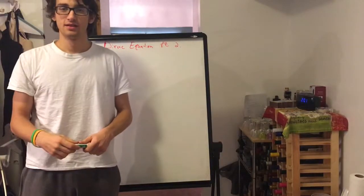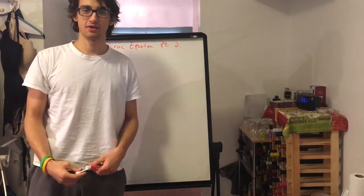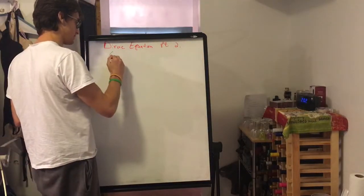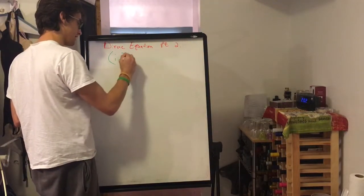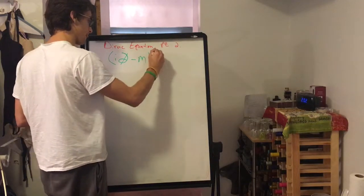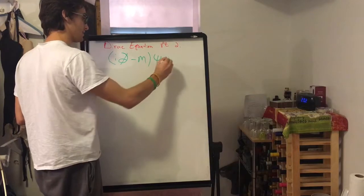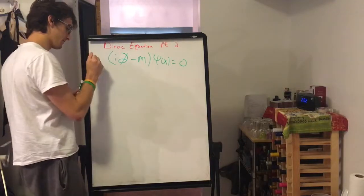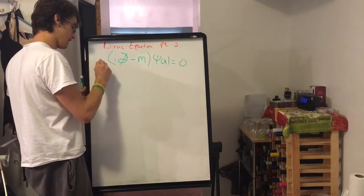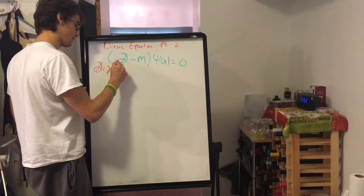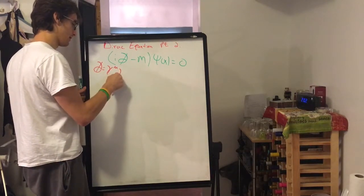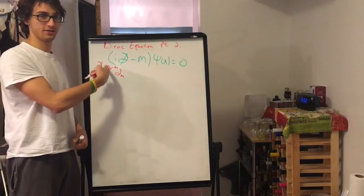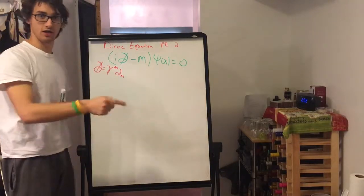Hello, welcome. In this episode, we're going to be going over solutions to the Dirac equation. So just to remind you, the Dirac equation looks like this: I del slash minus M acting on the state equals zero, where del slash is just a gamma matrix multiplied by the derivative at each spatial point, and there's a gamma matrix for each direction of spacetime.